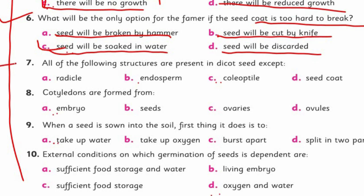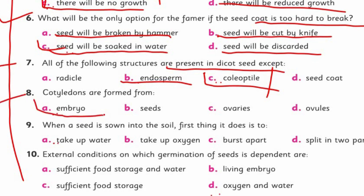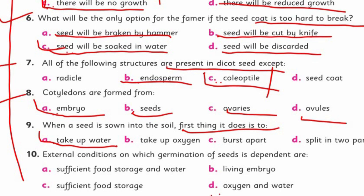All of the structures are present in a dicot except — in a dicot stem, the cotyledon is present but the endosperm is not, so endosperm is the most appropriate answer. Cotyledons are formed from the embryo. When a seed is sown into the soil, the first thing it does — we discussed this — is take up water. Taking up oxygen happens after that. So the first thing that happens is the seed takes up water.